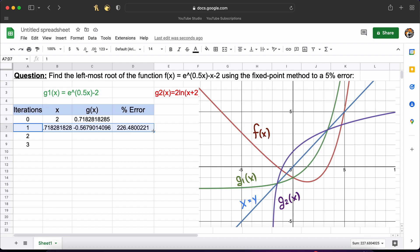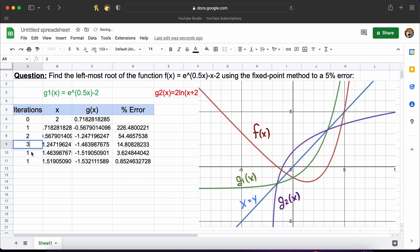Now, all we need to do is drag down these rows until we see our percent error is less than 5%. Therefore, as you can see, we can say that x root is located at minus 1.519 with a 3.62% error.